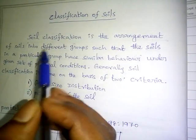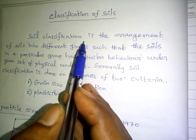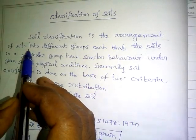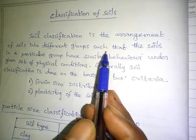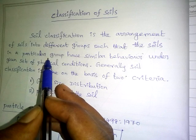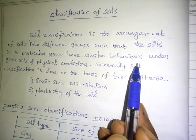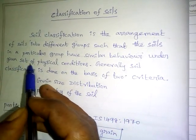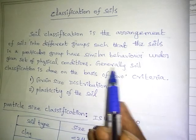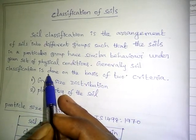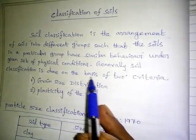Classification of soils: soil classification is the arrangement of soils into different groups such that the soils in a particular group have similar behavior under a given set of physical conditions. Generally, soil classification is done on the basis of two criteria.